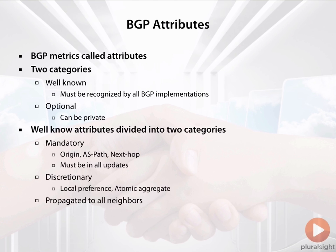Well-known attributes are divided into two different categories. There's the mandatory category, which means that these attributes have to exist in every single BGP update. This would include the origin, where the prefix was learned, the AS path, and the next hop.